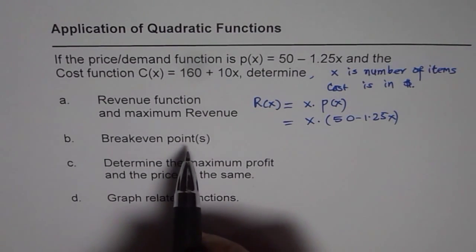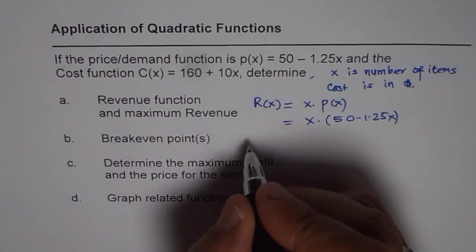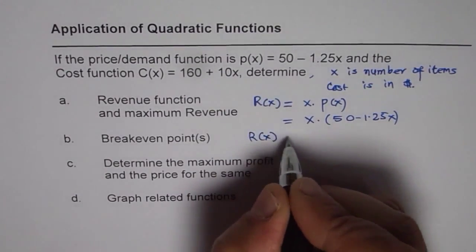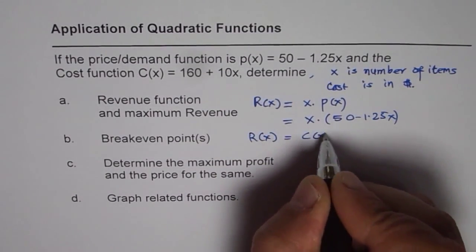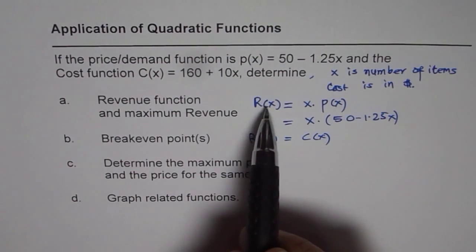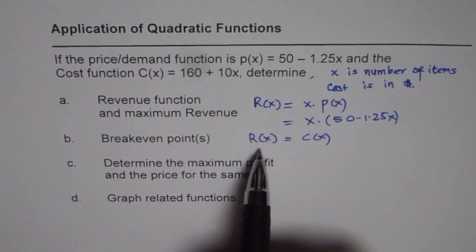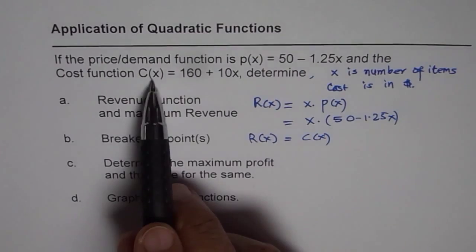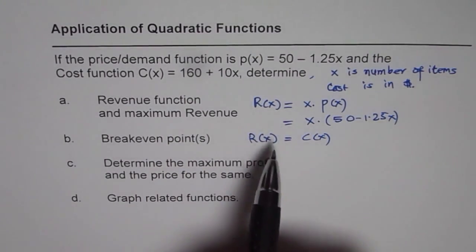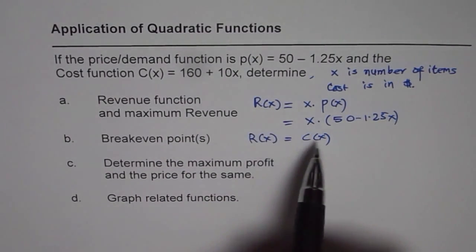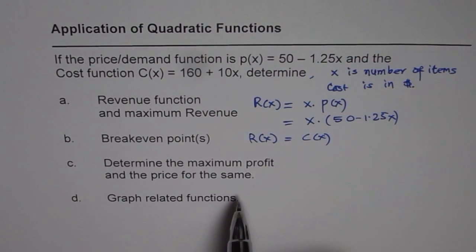Now breakeven points are the points where revenue equals cost function. So revenue function is what we will get in part A, and breakeven is cost function 160 + 10x should be equals to revenue. When you equate this you can find the value of x which will give you breakeven points.